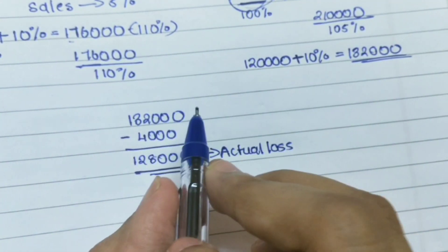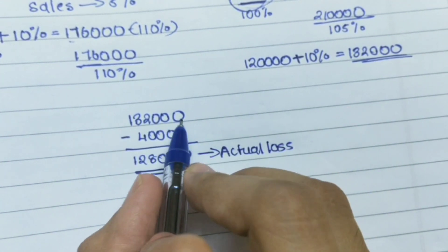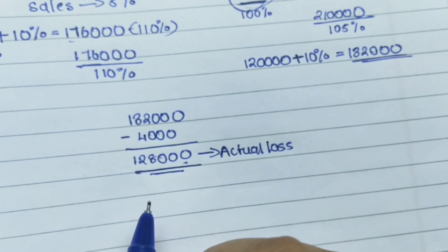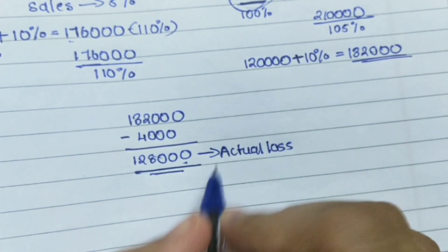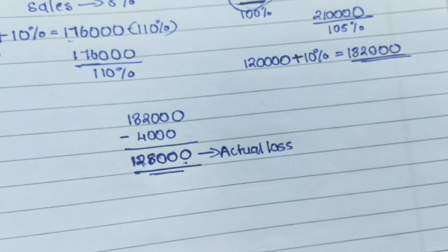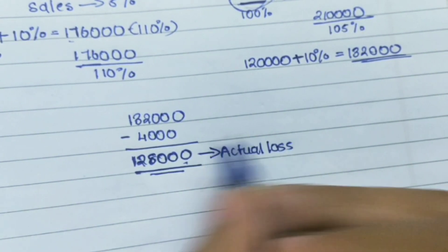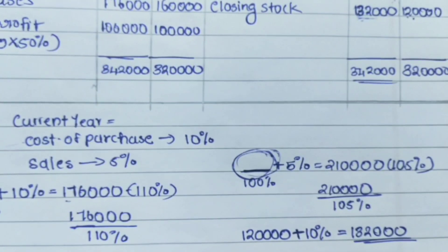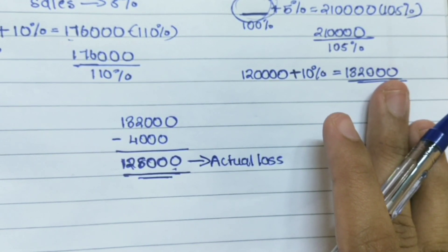1,28,000 is the actual loss — on September 15th 2013 before the fire there was stock of 1,32,000, and they could only save 4,000, so the rest was lost in the fire. Since they have not provided a policy amount, we cannot check if the average clause applies. We assume this is the claim amount — the final answer is 1,28,000. If you have any doubts, please comment. Thank you for watching.